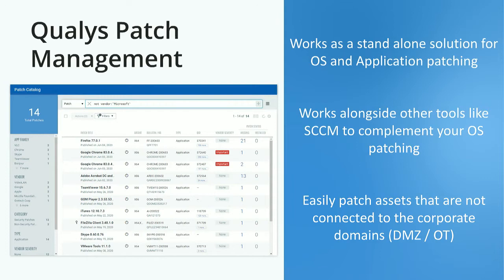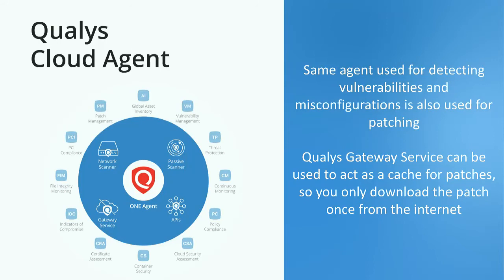Another use case is machines not connected to corporate domains, such as DMZ or operational networks where you don't want to create service accounts or link them to the corporate domain. Because the Qualys Patch Management Agent doesn't require any of that, we can patch those machines as long as we have access to our portal. This is all done by the Qualys Cloud Agent, so if you're already using it for vulnerability or misconfiguration management, you can just tick a few boxes and enable patching. We also provide the Qualys Gateway, which can be used as a local cache for patches, so subsequent agents grab patches from local cache rather than hitting the internet repeatedly.